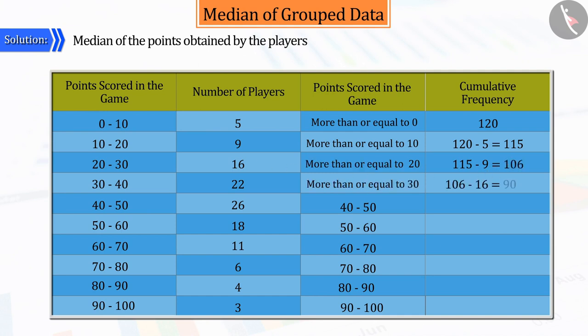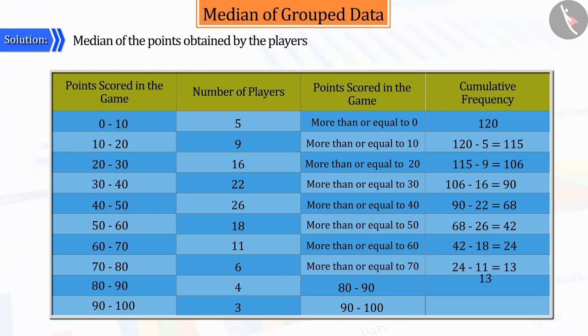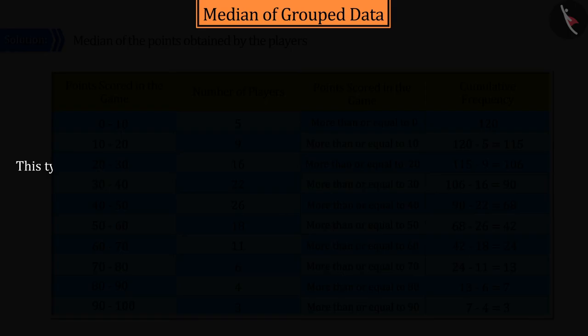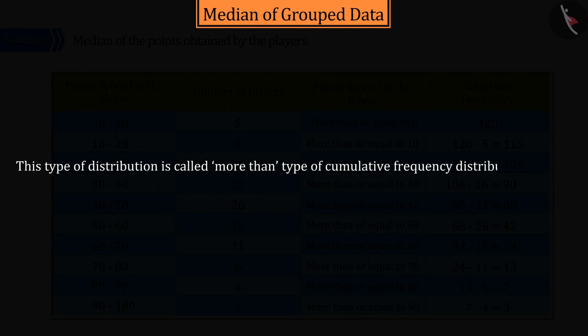In this way, we construct a cumulative frequency column in which the last row has the number of players scoring more than or equal to 90 points as 3. This type of distribution is known as the cumulative frequency distribution of the more than type.